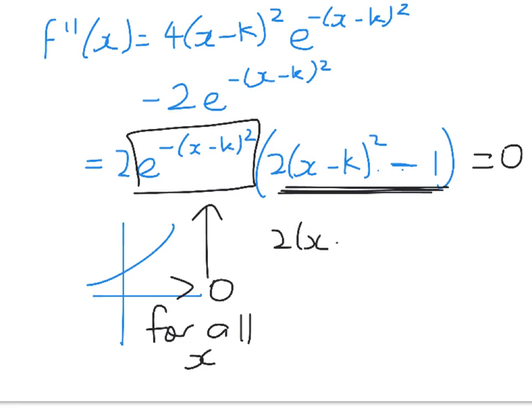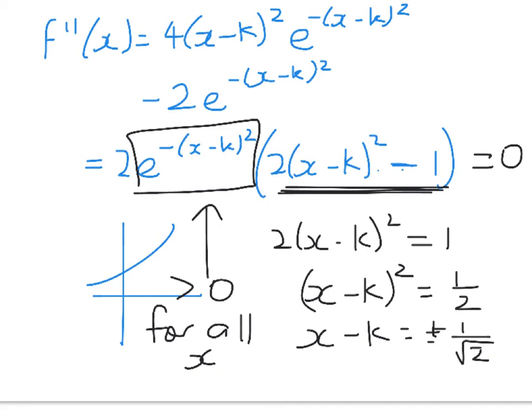So we get 2(x - k)^2 equals 1. (x - k)^2 equals 1/2. x - k equals plus or minus 1 over root 2. Once I'm taking the square root of both sides there, I just have to remember I've got two solutions. So my final answer is going to be that x is equal to k plus or minus 1 over root 2.